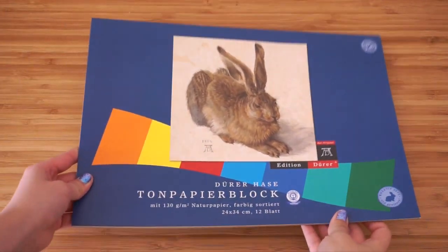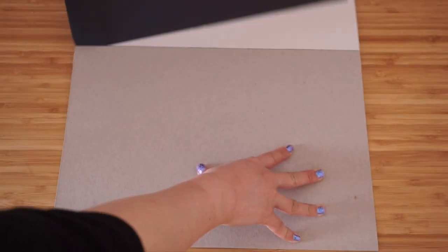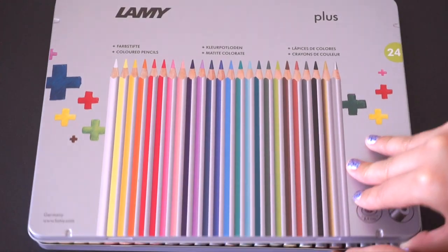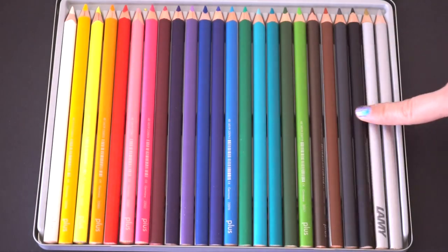To get started you'll need some black paper. You can find this in any stationery shop or you can simply ask your teachers at school. Then you'll need some colored pencils. Double check that your set has a white pencil because not all brands include this.